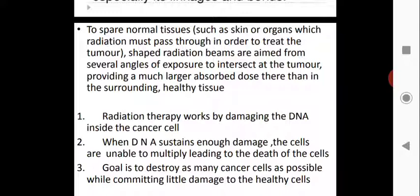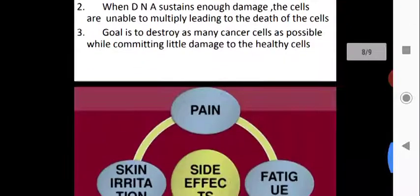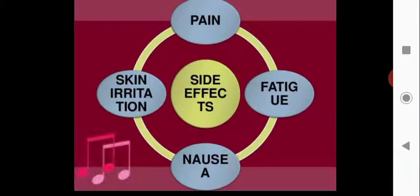Radiation therapy works by damaging the DNA inside the cancer cell. When DNA sustains enough damage, the cells are unable to multiply, leading to cell death. The goal is to destroy as many cancer cells as possible while causing little damage to healthy tissue. However, some side effects do occur, including pain, fainting, skin irritation, and nausea.